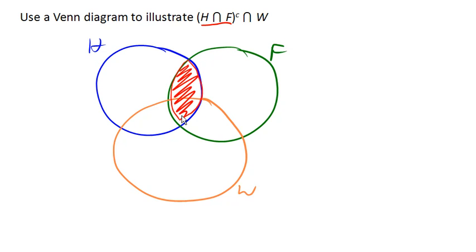Now we need the complement of that set. So the complement of that set would be everything outside of that little football-shaped region. So we don't want that part. We want everything outside of it.